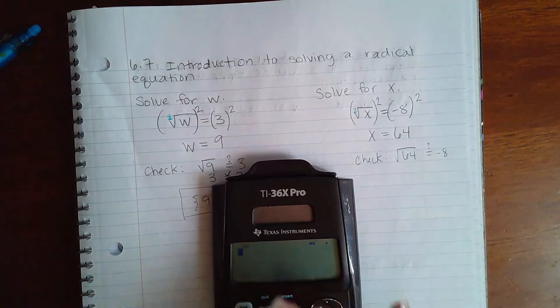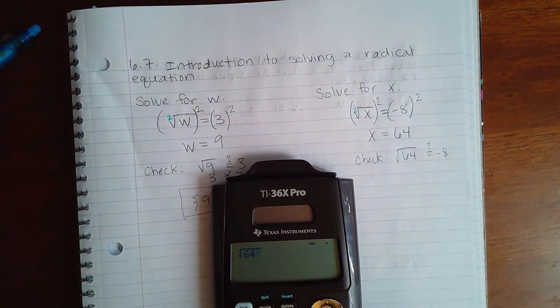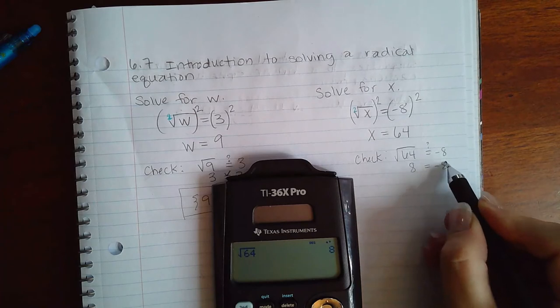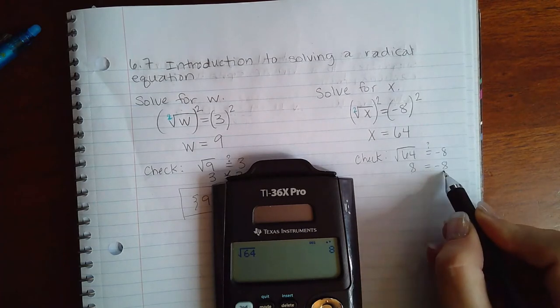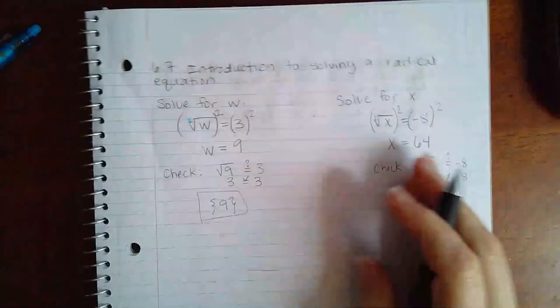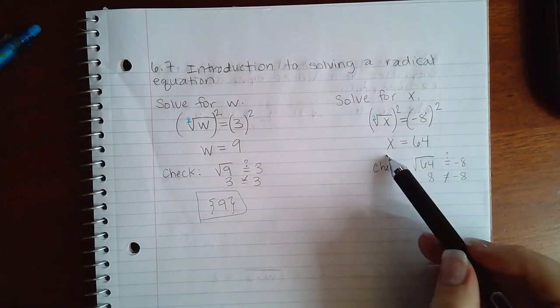Well, the square root of 64 in my calculator tells me positive 8, and does positive 8 equal negative 8? It does not. So in this case, even though I did the math right to solve for X,